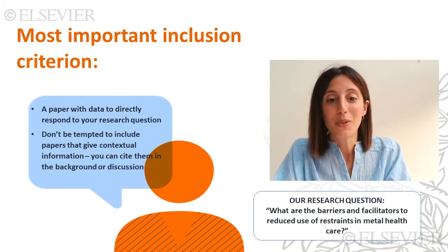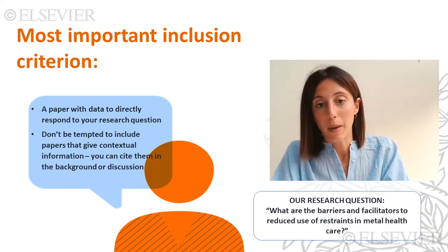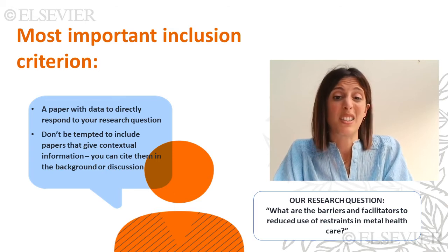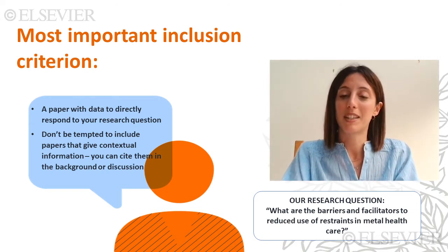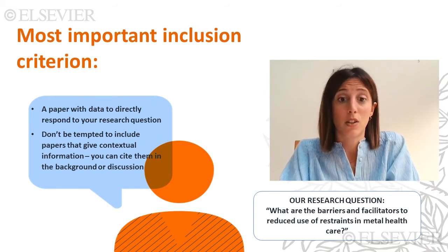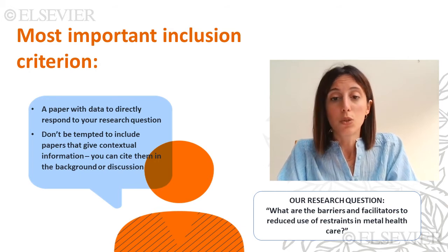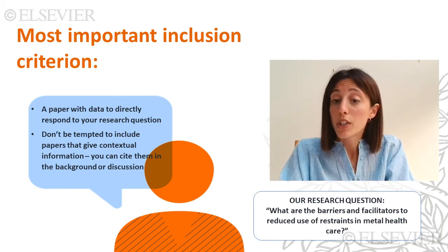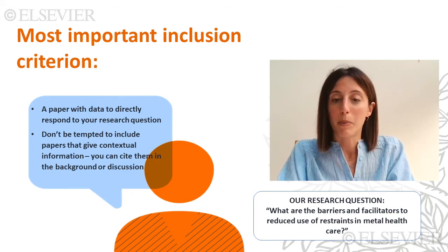As a final tip, the most important inclusion criterion — one you do not need to specify formally but must keep in mind — is whether a paper actually answers your review question or not. You might be tempted to think it doesn't answer the question directly but touches on it marginally, so you include it. Just don't do it. You will end up with studies that don't answer your review question. For example, if you find a study about most frequent family complaints in mental health care settings, do not include it just because it found that families complain a lot about restraints. That is important contextual information you could include in your introduction, but it does not answer your question.